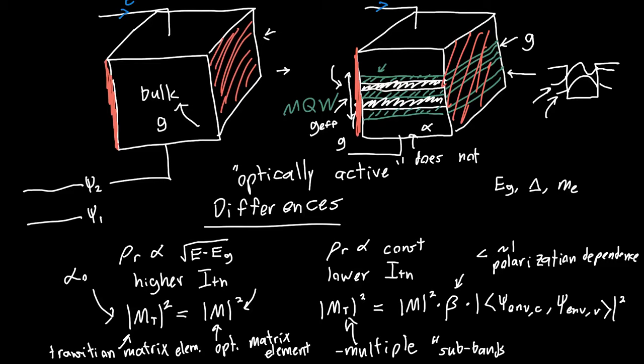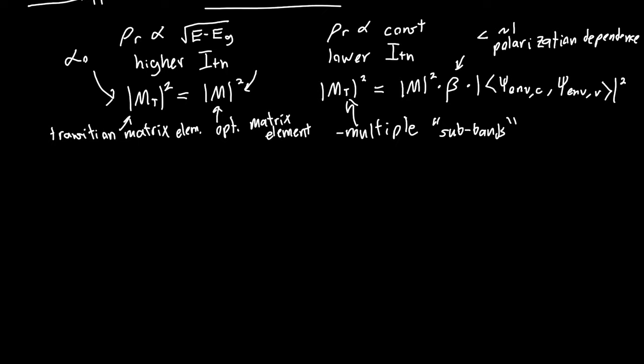So in the bulk case we only had one conduction band and one valence band. In the future we'll learn that that actually isn't the case, but for now that's the case. So we had a valence band and a conduction band.